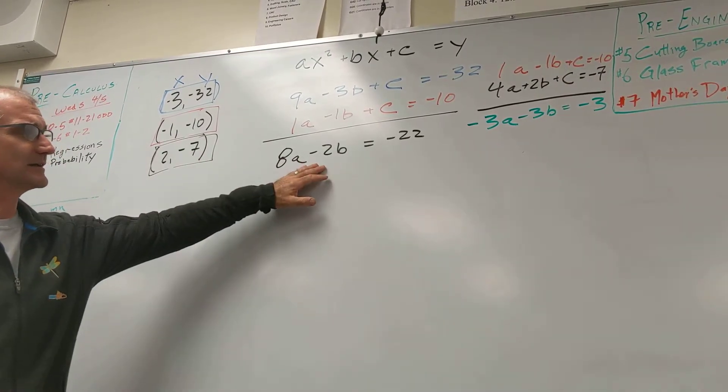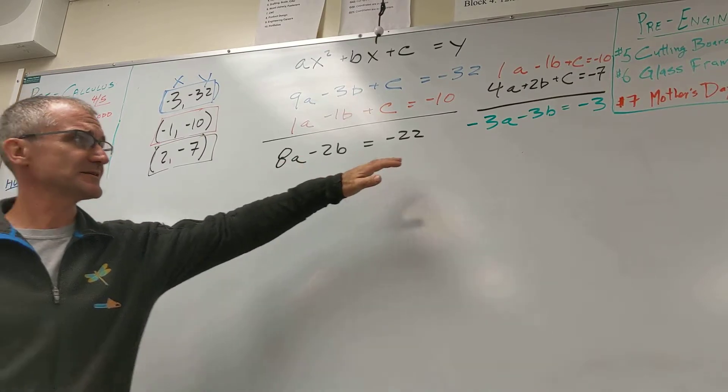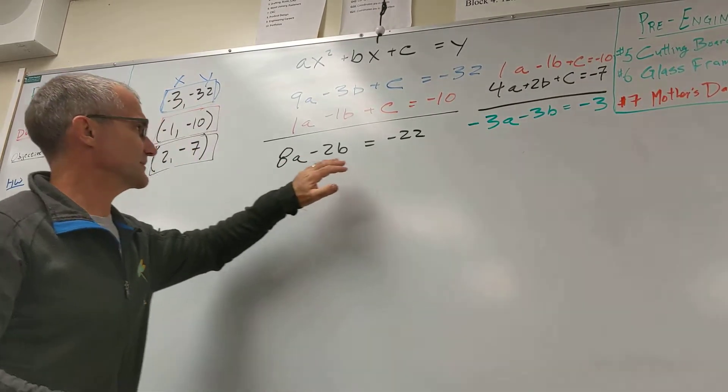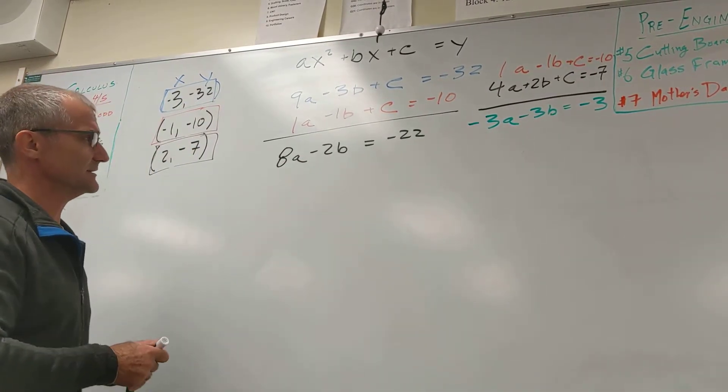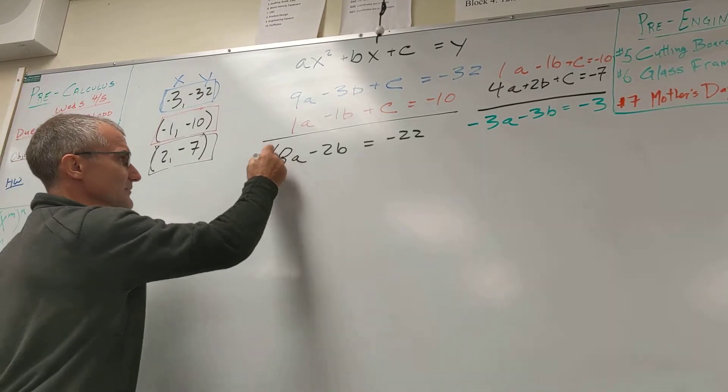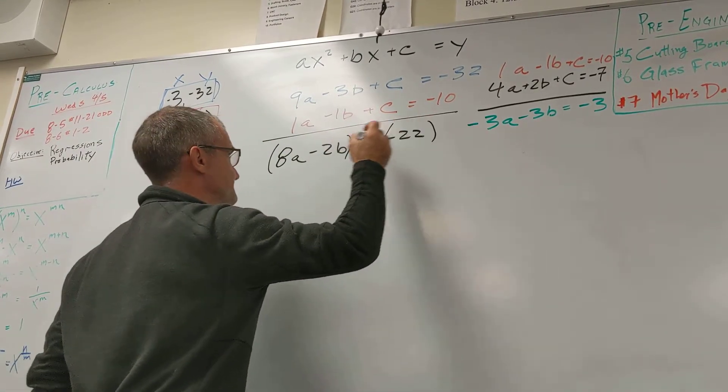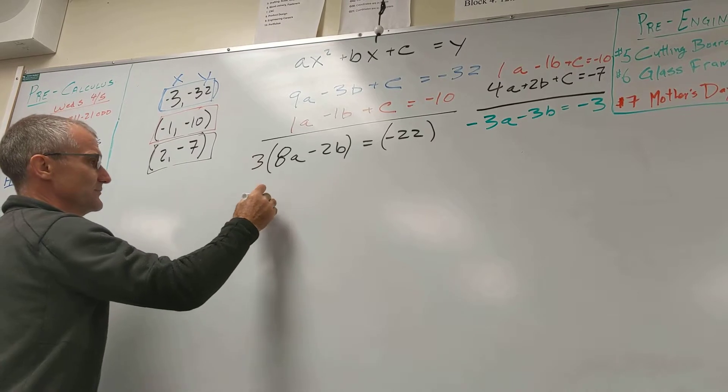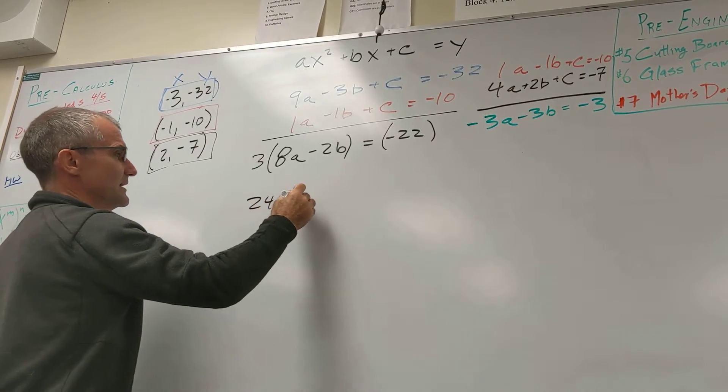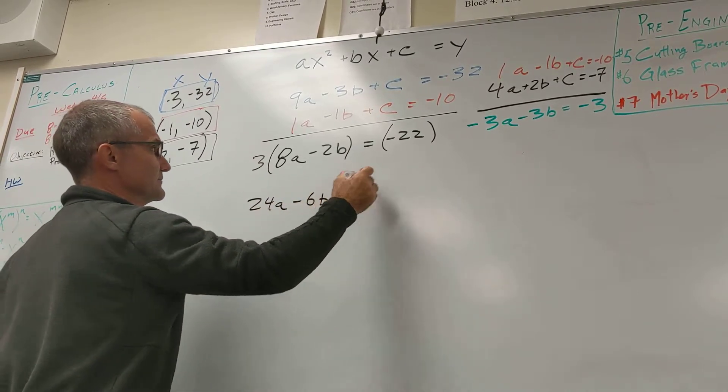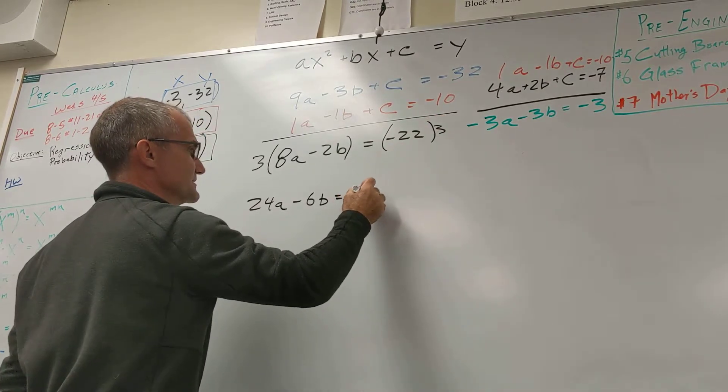To get rid of the b, I'm going to convert them into 6s so they'll cancel. So I'm going to rewrite this black equation here. I'm going to multiply it by a 3 on both sides. To get 24a minus 6b is equal to negative 66.